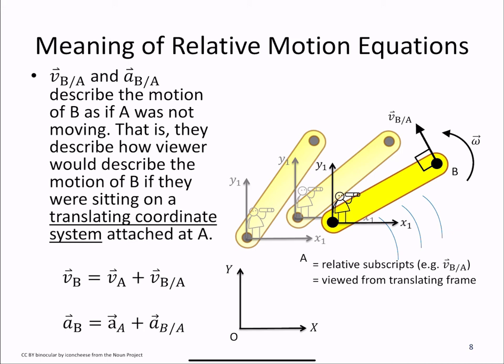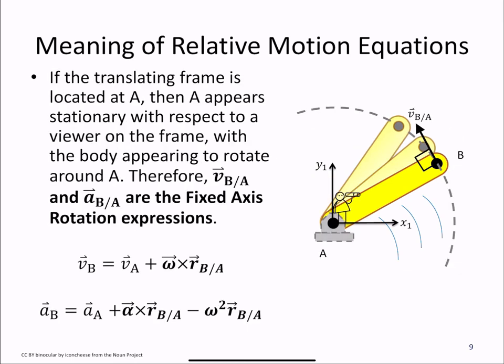That is, how a viewer on a translating coordinate system attached to A would see B moving. Since that observer on our translating coordinate system at A is not translating or rotating with respect to the coordinate system, what they observe is B rotating around them in a circle as if it was pinned.